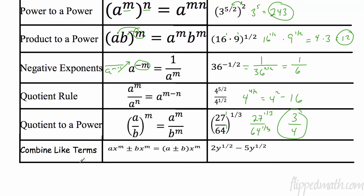This is kind of a new one — it's an exponent rule, but it's something you need to understand. When we combine like terms, if we have the same variables to the same power, I can add the coefficients. So I have y to the one half and y to the one half — I'm going to add two plus negative five, which is negative three, and I keep my term y to the one half.